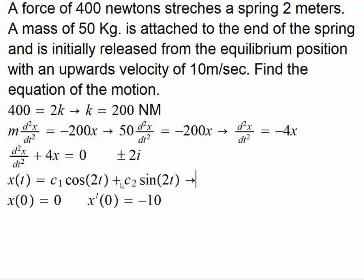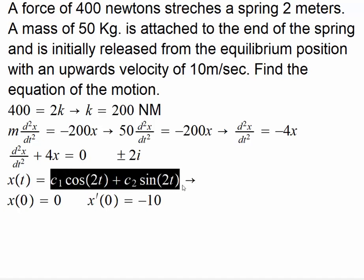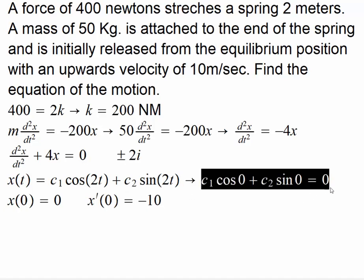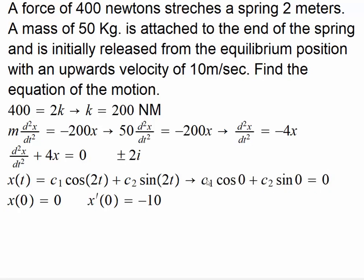So x(0) equals 0. What will that give us? Let's put this as 0, then cosine of 0 and here we have sine of 0, and that equals 0. So what will that give us?